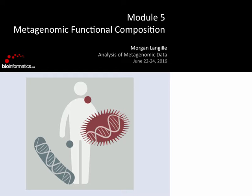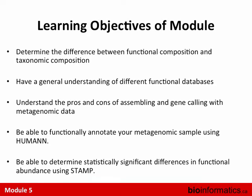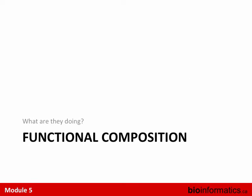This morning we talked about metagenomic taxonomic annotation, and yesterday was all about taxonomy. Today's learning objectives: I'm going to discuss what we mean by functional composition versus taxonomic composition, give a high-level overview of different functional databases, talk about the pros and cons of assembly and gene calling for functional annotation, walk through how HUMAnN works, and then you'll use HUMAnN and STAMP in the tutorial this afternoon.